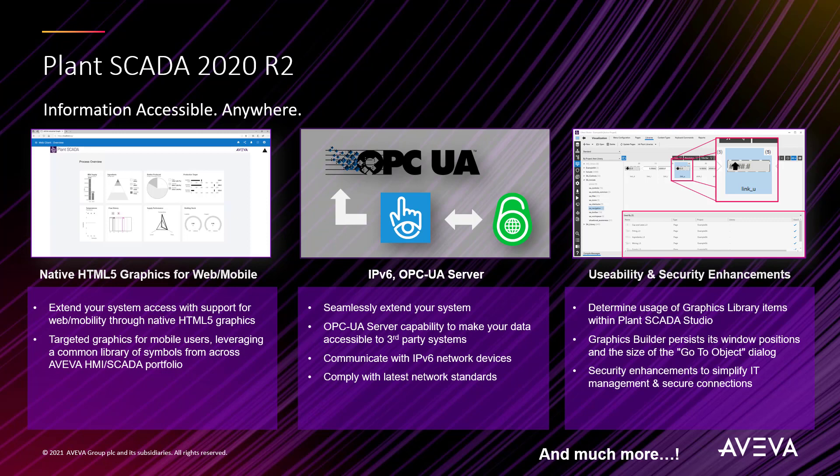The key themes of this release include integration of Aviva Industrial Graphics to support native HTML5 browsing via web and mobile devices. This complements our existing native graphics for desktop clients with industrial graphics natively compatible with HTML5 browsers, allowing customers to access screens directly on their tablets and mobile devices.